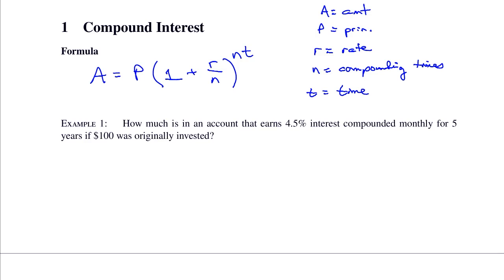Example number one. How much is in an account that earns 4.5% interest compounded monthly for five years if $100 was originally invested? So amount is equal to the principle invested, $100, times 1 plus the interest rate. But you have to write your interest rate as a decimal. So this is 0.045 divided by N. N is the number of times per year the money is compounded. How many times per year is this money compounded? 12 times, based on the monthly. Raised to the 12 times 5 for five years.